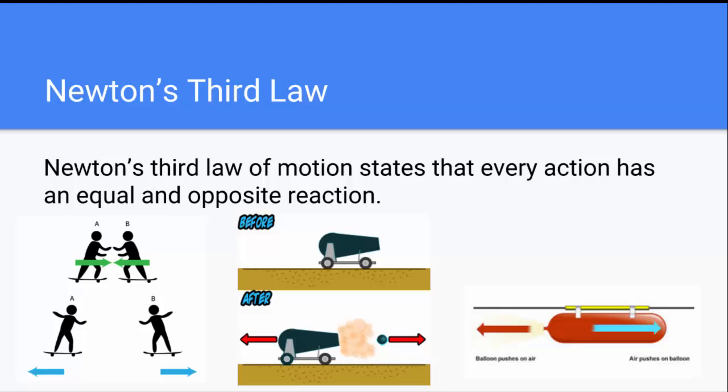When you are standing on the ground, the ground is pushing you back up. The same thing happens when you are on a trampoline. In the case of the skateboarders, as seen in the picture, the skateboarders are pushing together. A reaction that is equal in strength, but the opposite direction occurs.